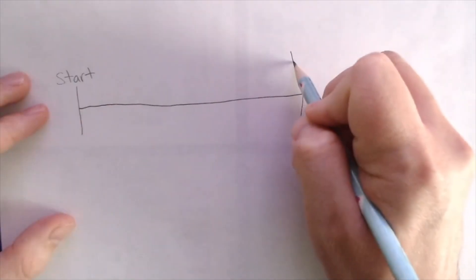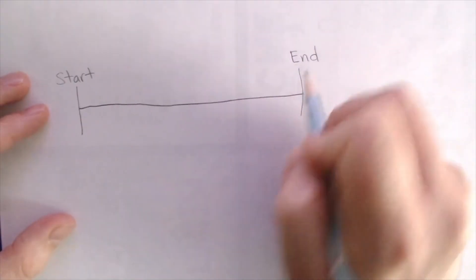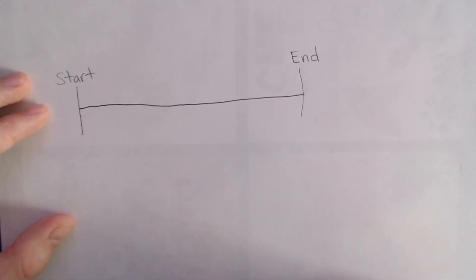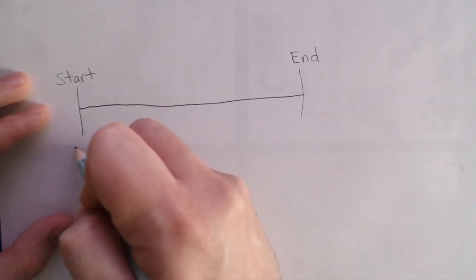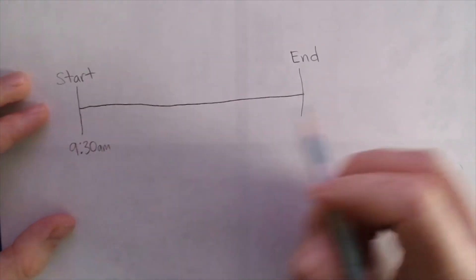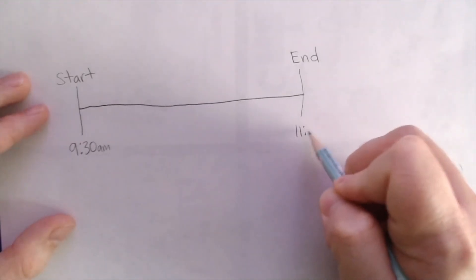So, I'm going to draw a number line here, and we're labeling the start and the end. I'm also going to put the hours on the bottom, so we know what the time was. The start time was 9:30am, and the end time was 11:15am.